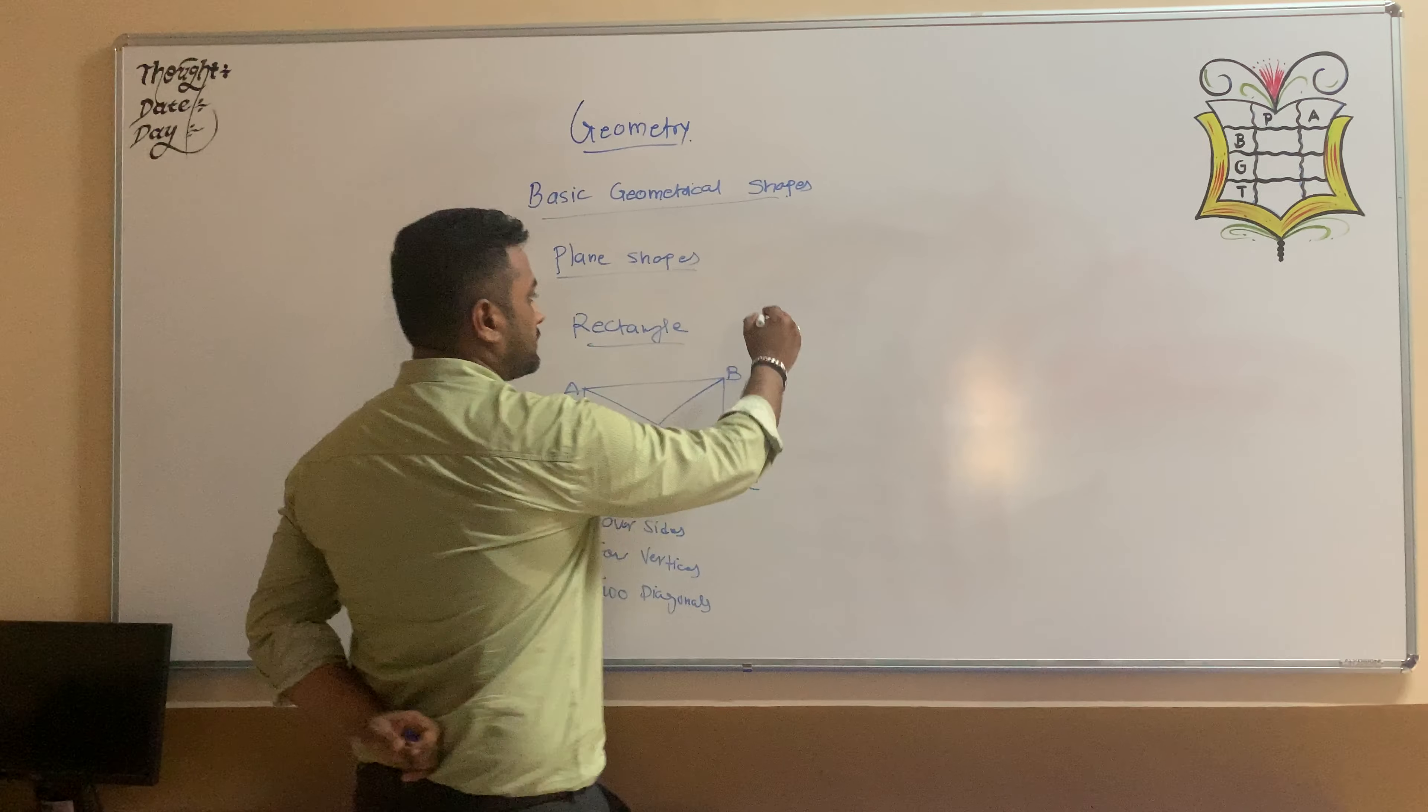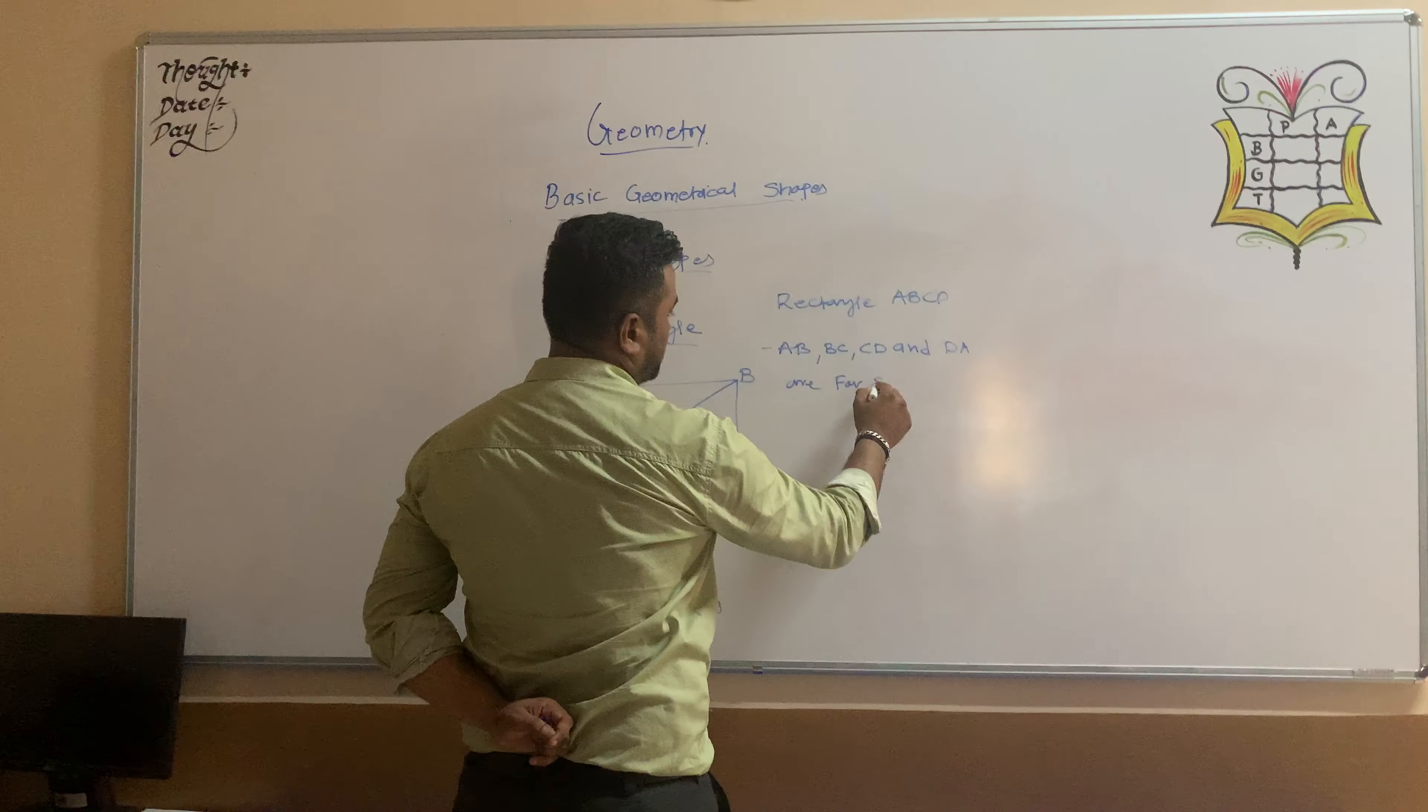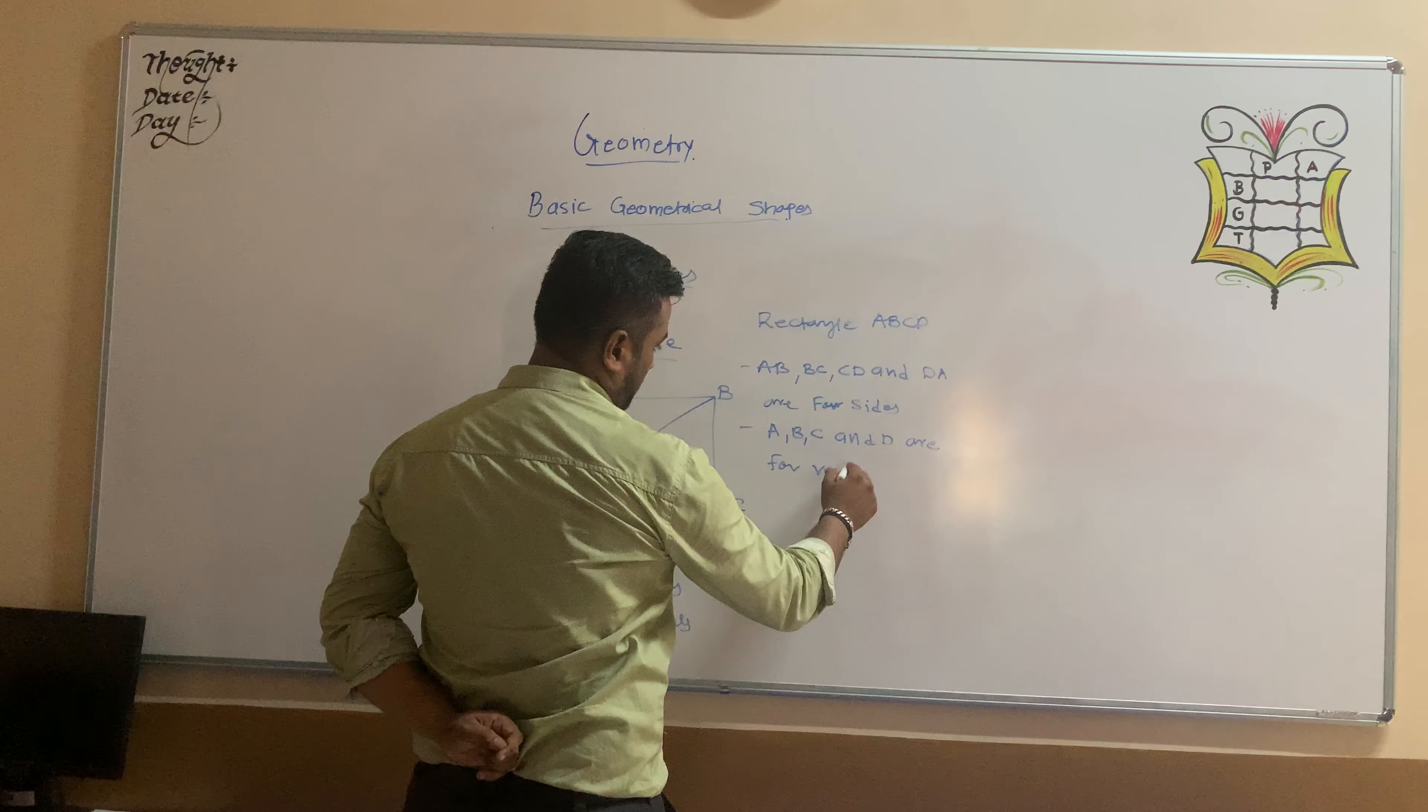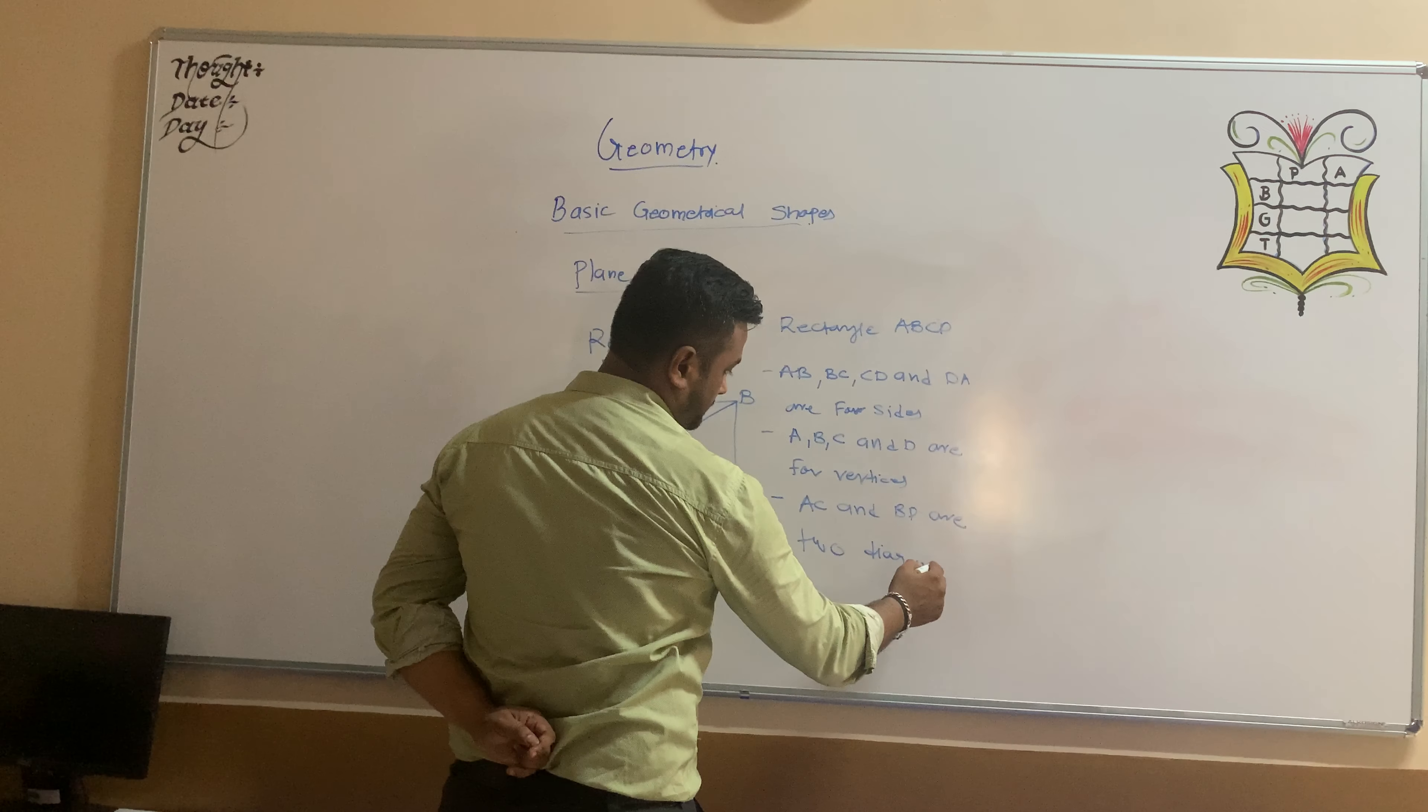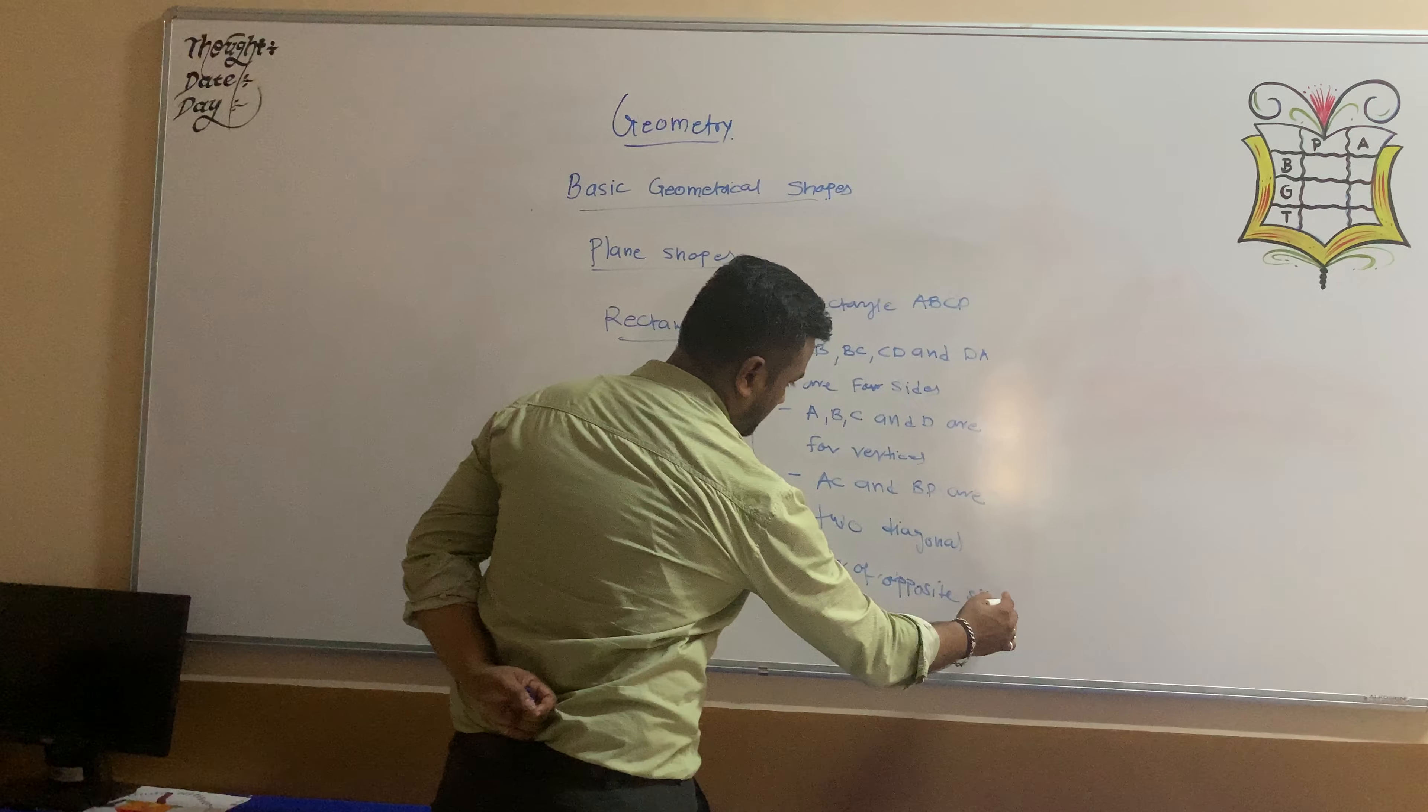So in the Rectangle ABCD, AB, BC, CD and DA are four sides. And A, B, C and D are four vertices and AC and BD are two diagonals. And in Rectangle, opposite sides are same. You can see that pair of opposite sides are same.